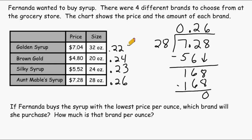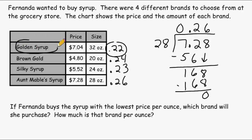Out of these four brands, 22 cents per ounce is the cheapest. We have figured out that Golden Syrup is the cheapest brand per ounce.